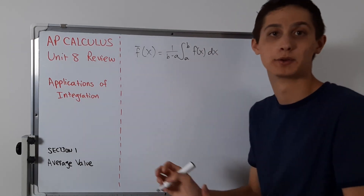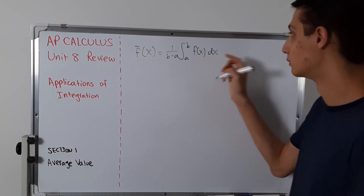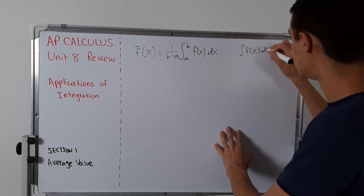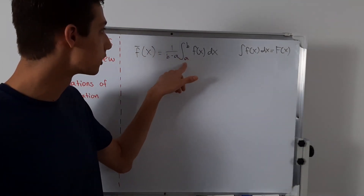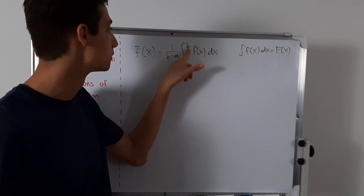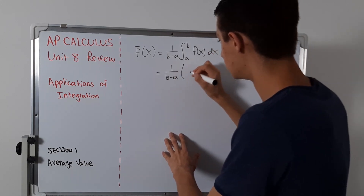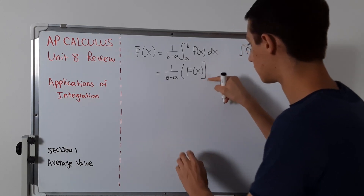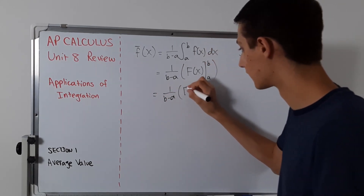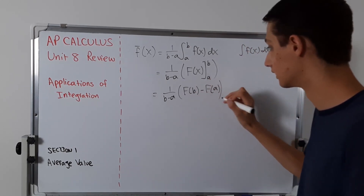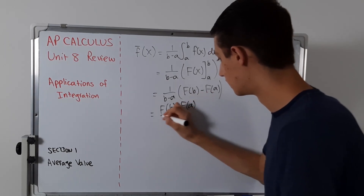I'm directly giving you the formula because I'm about to explain what's going on. If we say the integral of f(x) dx equals capital F(x), this can help us rewrite things. The integral from a to b gives us capital F(b) minus capital F(a), so this becomes one over b minus a times [F(b) minus F(a)], which we can rewrite as F(b) minus F(a) over b minus a. This is technically the fundamental theorem of calculus.